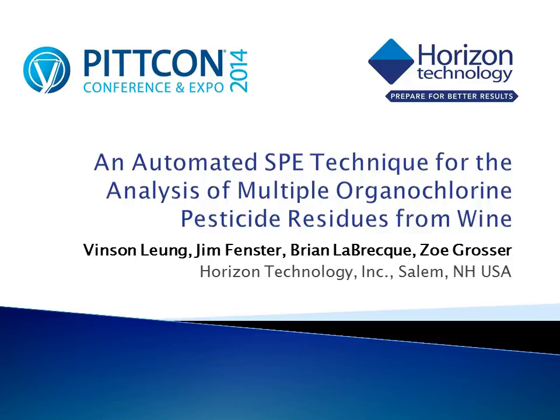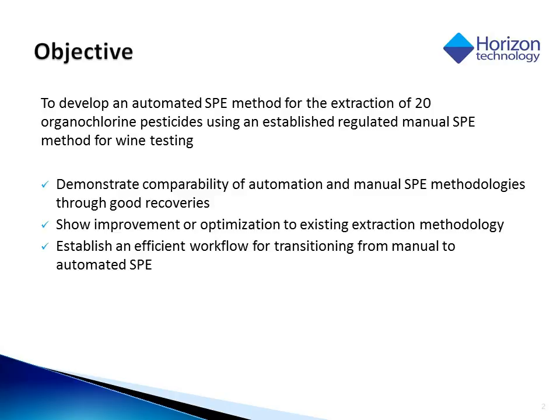Today we're going to talk about the automation of SPE for the analysis of multiple organochlorine pesticide residues from wine. The objective of this study is to develop an automated SPE method for the extraction of 20 organochlorine pesticides using an established regulated manual SPE method for wine testing. We are to demonstrate comparability of automation and manual SPE methodologies through good recoveries, show improvement or optimization to existing extraction methodology, and establish an efficient workflow for transitioning from a manual to automated SPE.